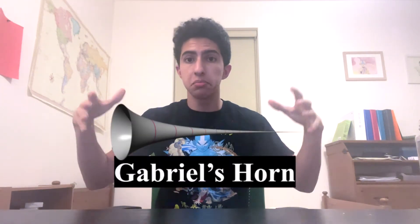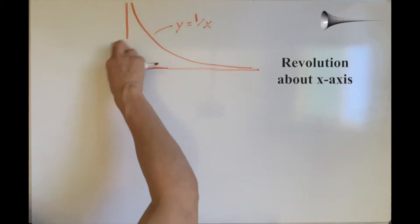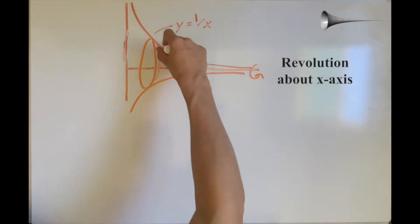But I can do this with another shape, an infinitely long one called Gabriel's horn. Here's why. Gabriel's horn is a special shape formed by revolving the function y equals 1 over x about the x-axis.